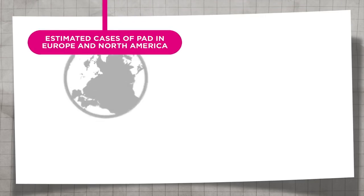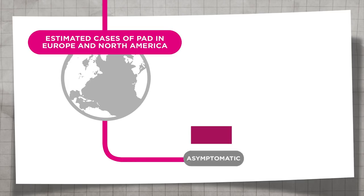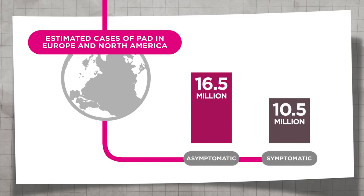Importantly, PAD is frequently asymptomatic. More than half of patients undergoing major amputation for critical limb ischemia may have had no symptoms of ischemia as little as six months earlier.